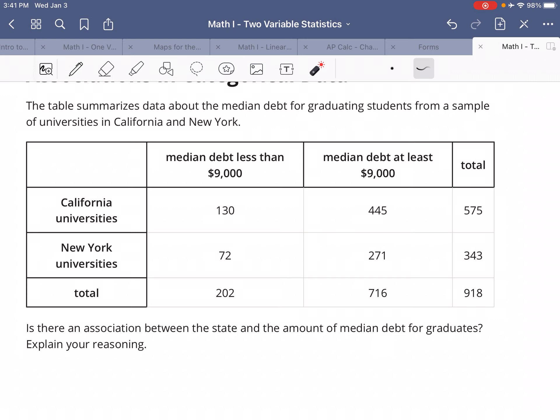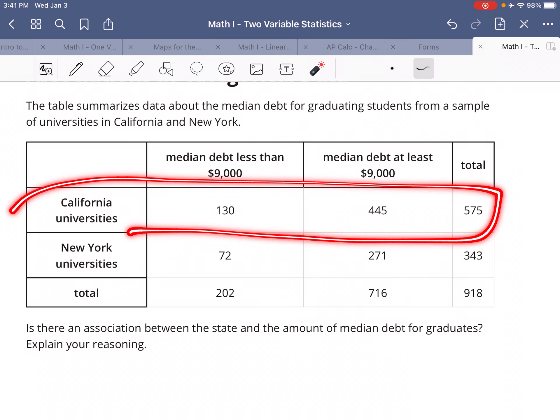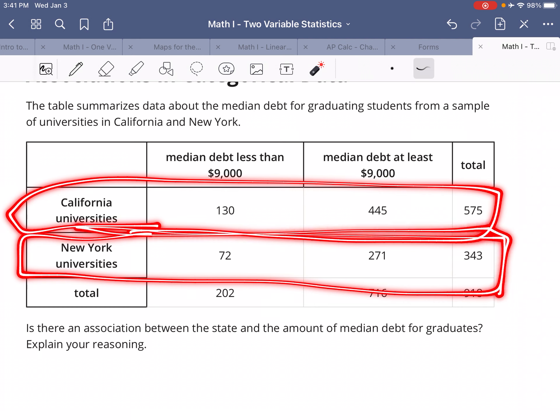So that's what you want to do. You want to look at each row individually since we're comparing California and New York universities to each other.